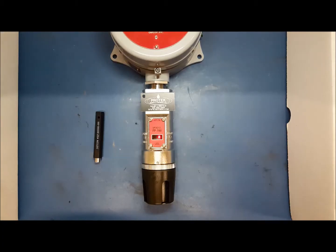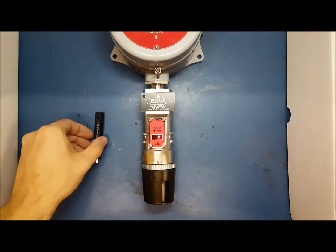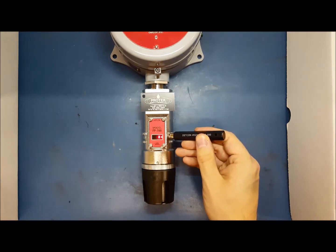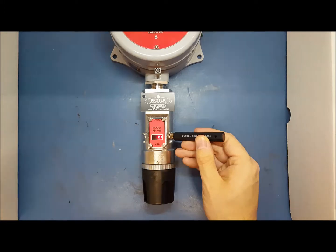With the unit powered up, hold the DETCON programming magnet over PGM2 on the ITM. An arrow will appear on the display pointing right, indicating that the magnet is interacting with PGM2. After 5 seconds, the display will read View Sensor Status across the screen.